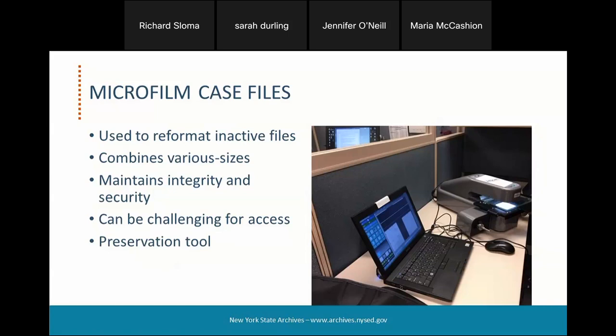One disadvantage in terms of access that I've seen with state agency records: one agency has regularly been transferring its permanent records to the state archives, and periodically they will cut off their files, put them on microfilm, and have multiple record series on one roll of film. Each series might have different confidentiality and access restrictions associated with it, so it makes it very difficult for us to make the records available to researchers because we have to go through and make sure there aren't restrictions for each record within each series. Just something to keep in mind.